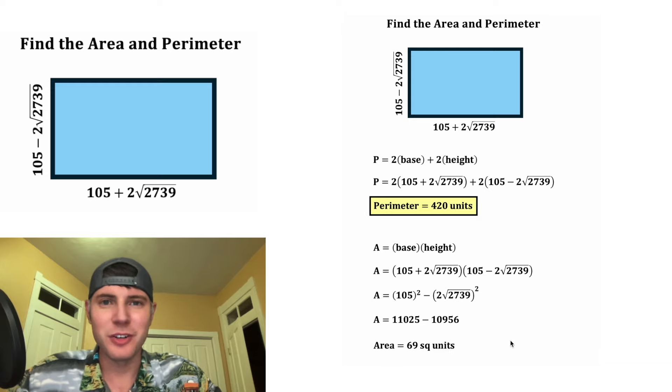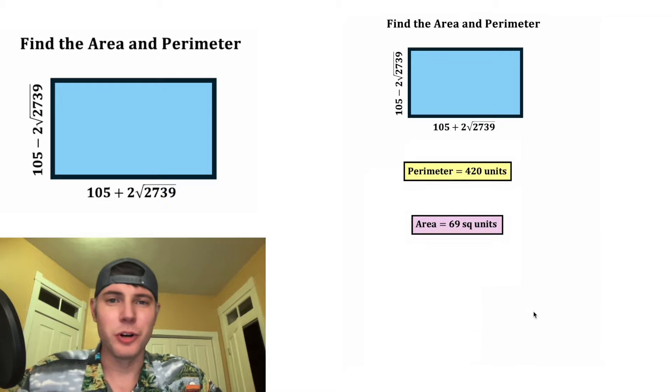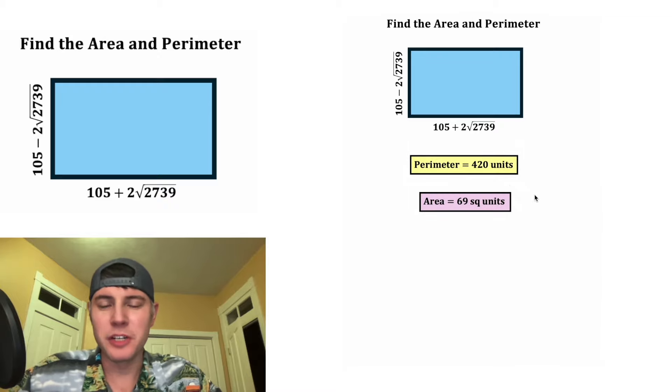So we found that the area is 69 square units. This also looks important, let's put a box around it. These two boxes are the answers to our question: the perimeter is 420 units and the area is 69 square units.